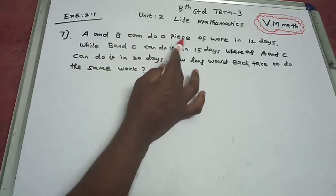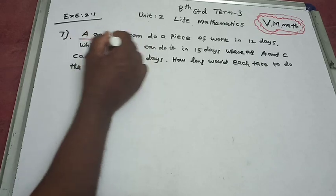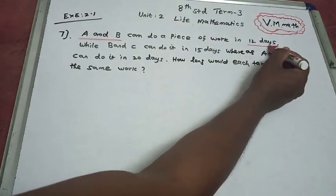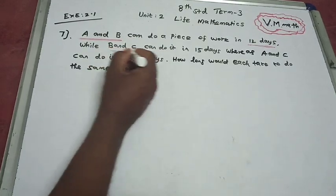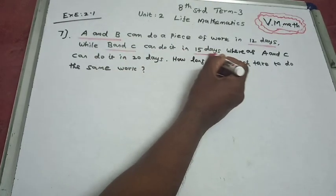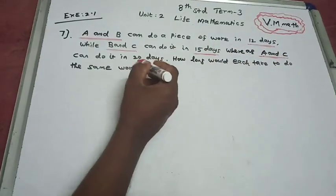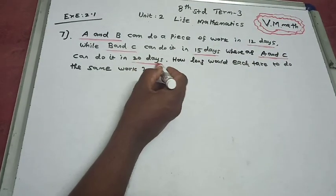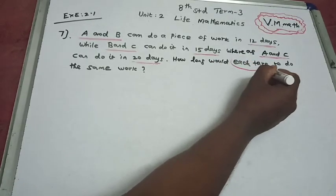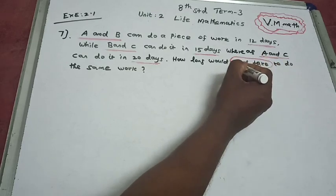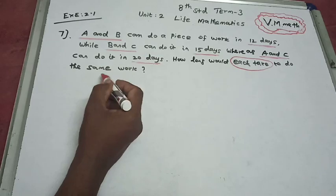A and B can do a piece of work in 12 days, B and C can take 15 days, and A and C can do it in 20 days. How long would each take to do the same work?